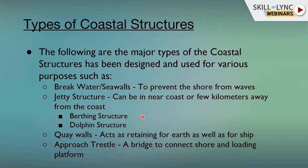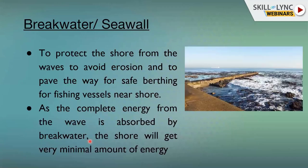Let me introduce the types of coastal structures. I'll just get you acquainted with the terms first: breakwaters, jetty structures (which include birthing structures and dolphin structures), quay walls, and approach trestles. Each structure has its own purpose: breakwaters prevent shore erosion from waves; jetty structures are for cargo loading and unloading; quay walls serve a similar purpose but are solid walls; and approach trestles are bridge-like connections from shore to the vessel landing location.